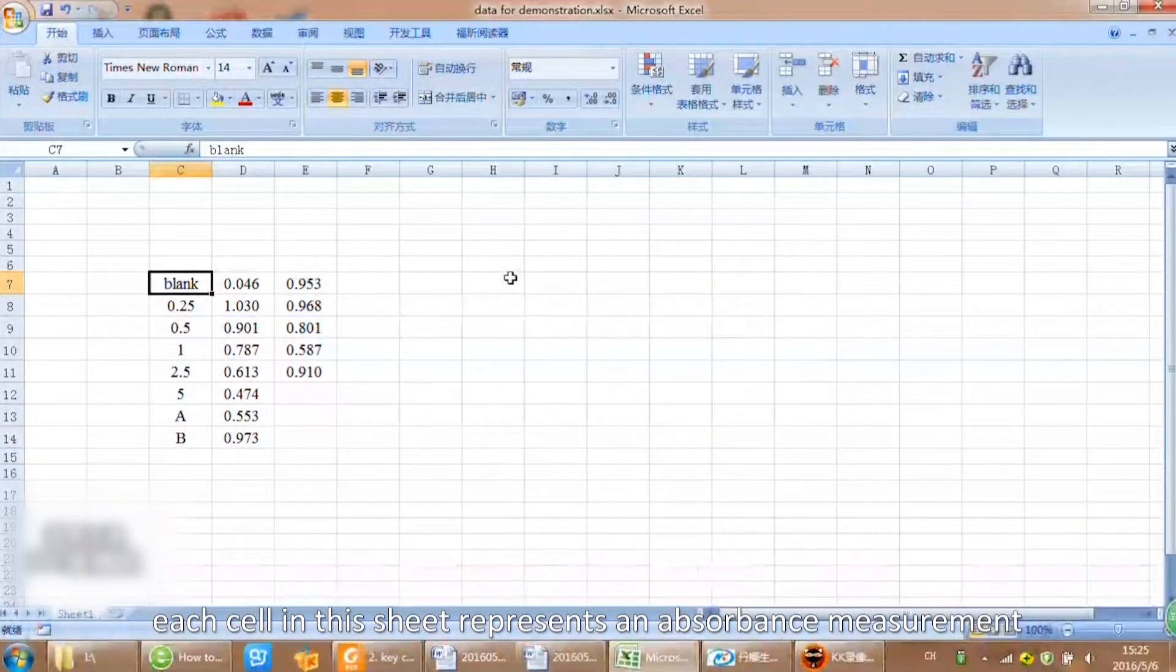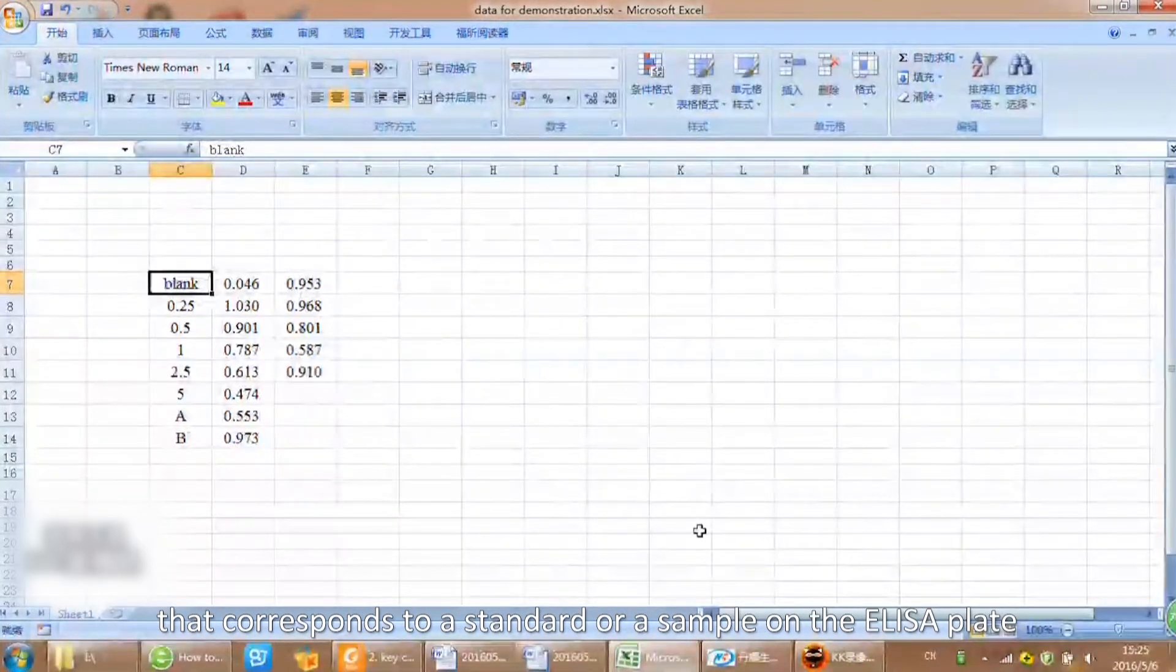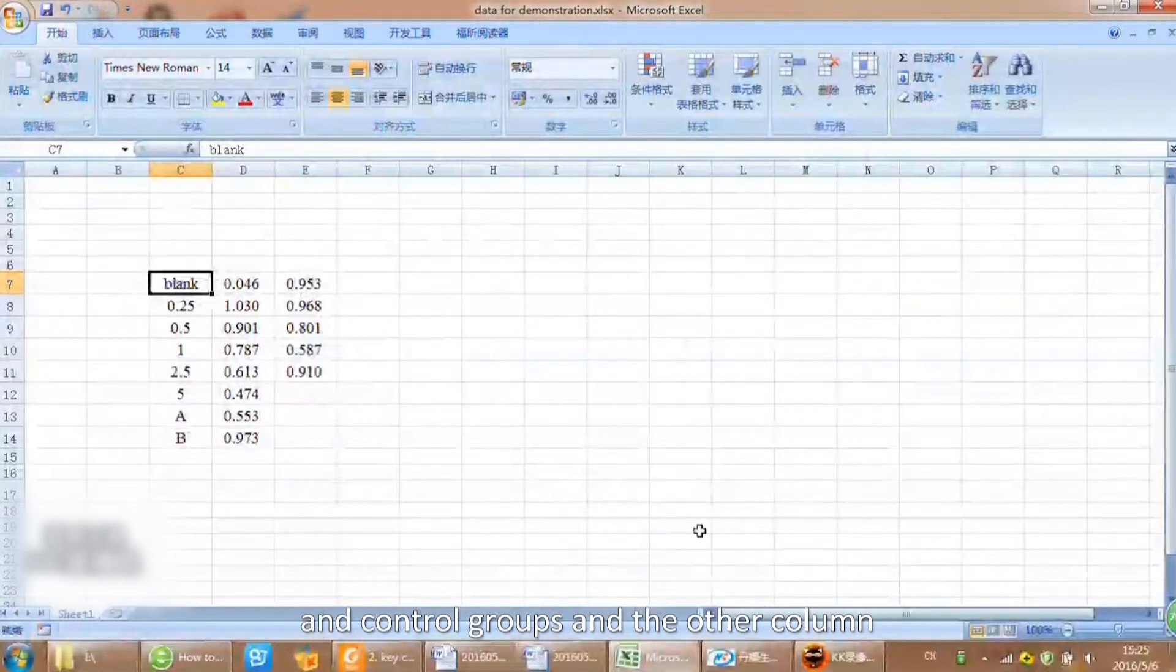Data analysis: As you can see here, each cell in this sheet represents an absorbance measurement that corresponds to a standard or sample on the ELISA plate. The first eight cells on the left column are the standard curve and control groups, and the other column is the absorbance of our samples.